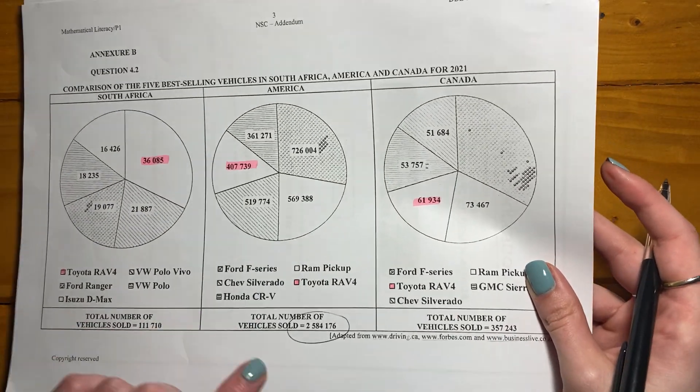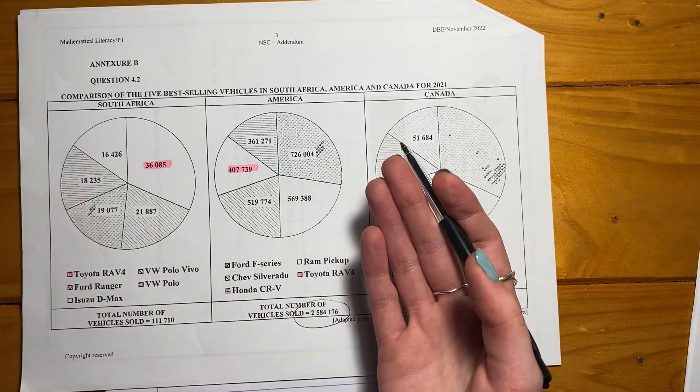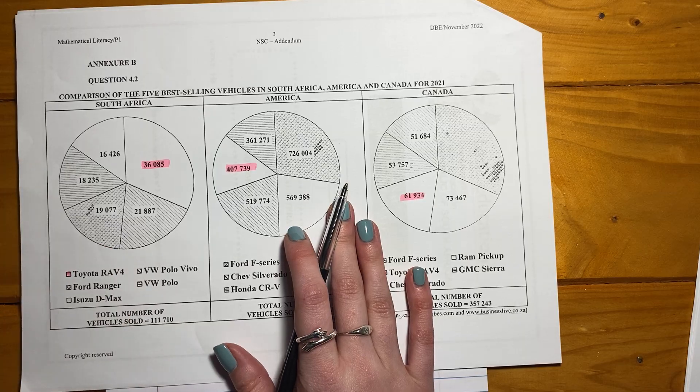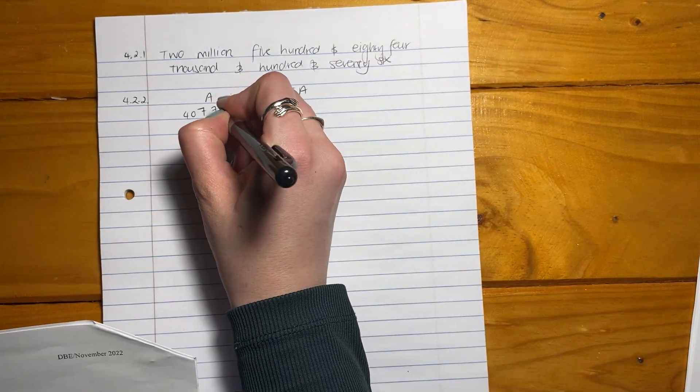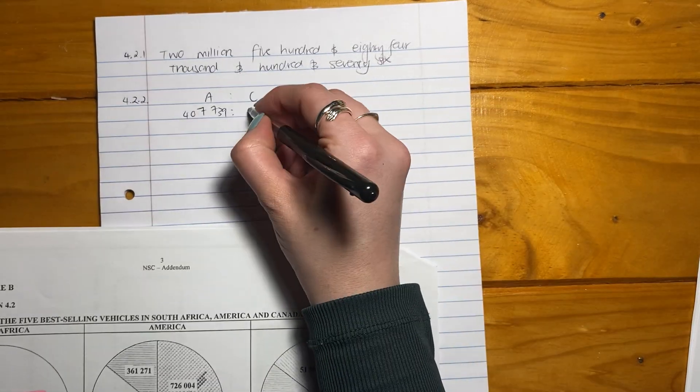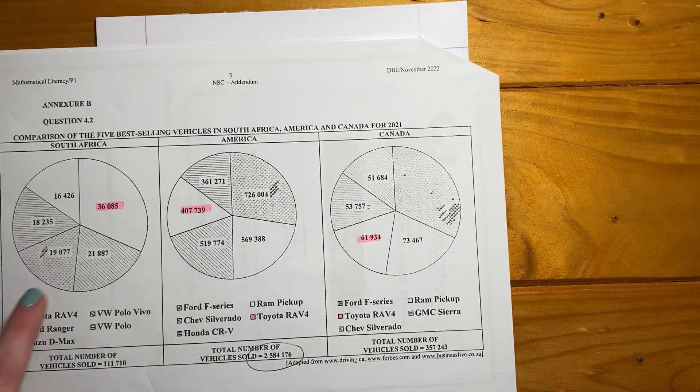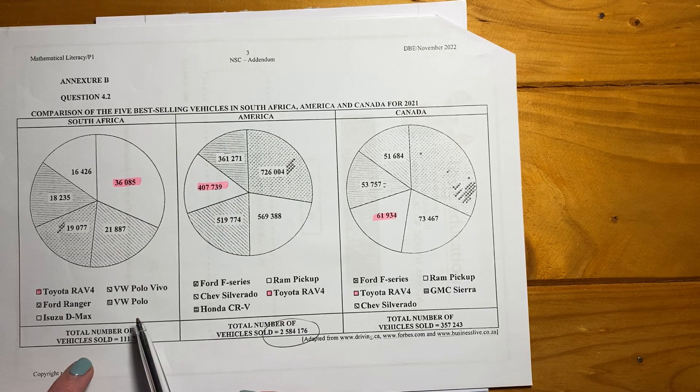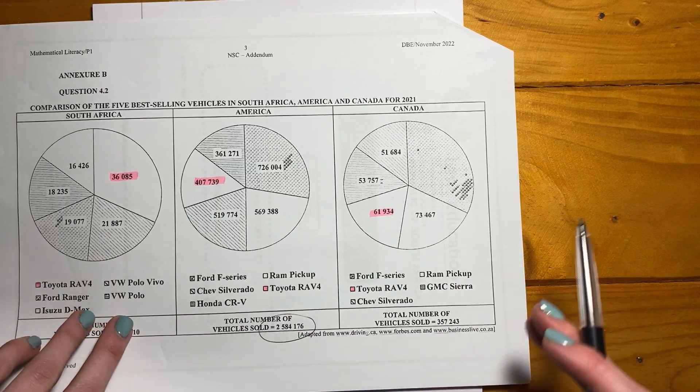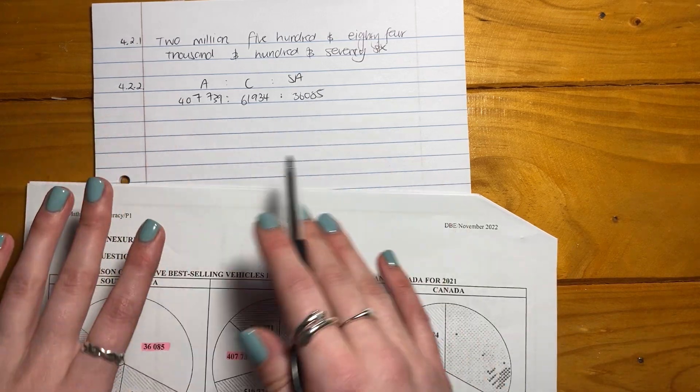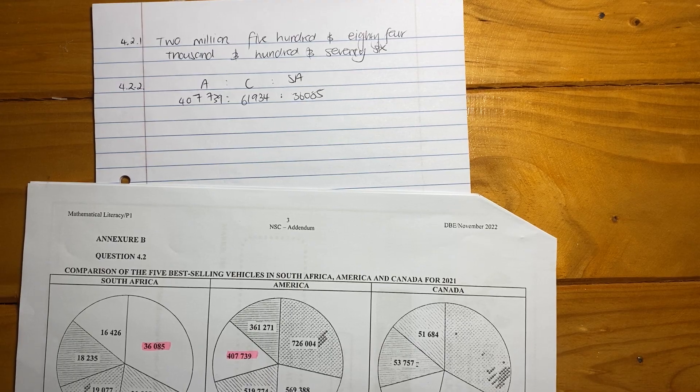So it's America to Canada to South Africa. America, we're looking at RAV4. I went and colored mine in in pink just because you can see that these two slices here both came out as white when I printed out black and white. Don't stress about that being the case for you. So it's going to be America 407,739 to Canada 61,934 to South Africa 236,085. You go look here and you'd say, what are my RAV4, what color is that? And look for that color on the pie chart and do that for each. They didn't ask us to simplify the ratio.